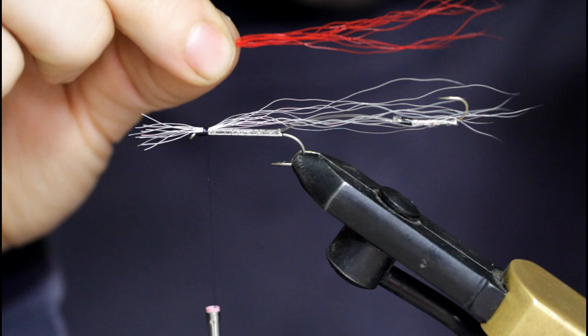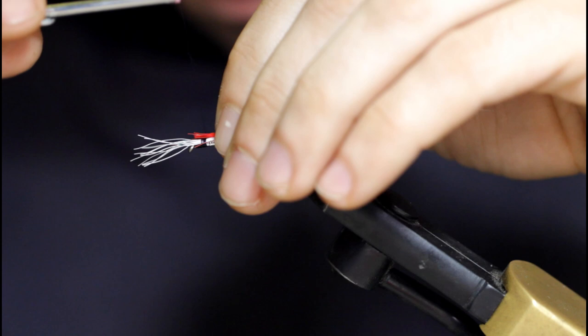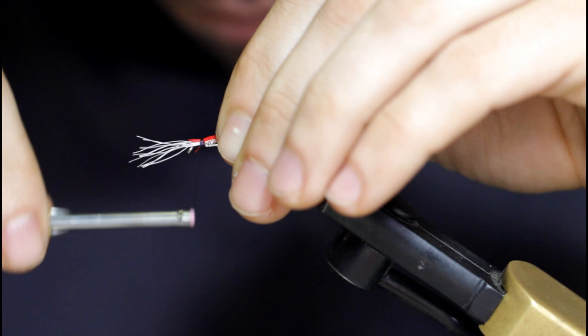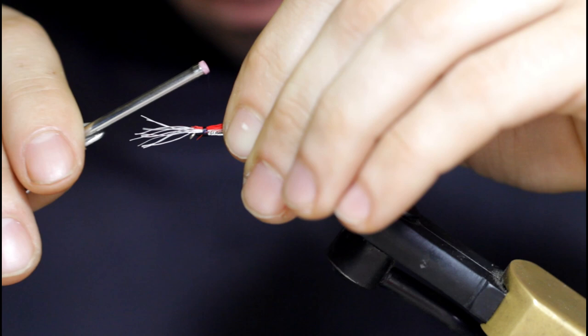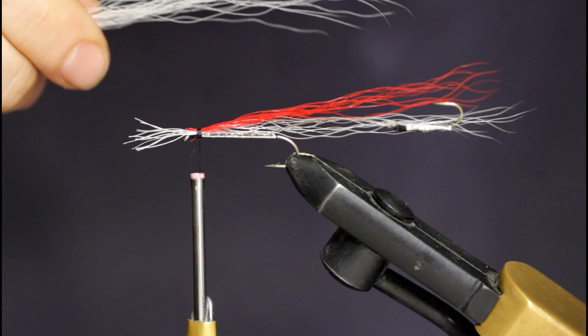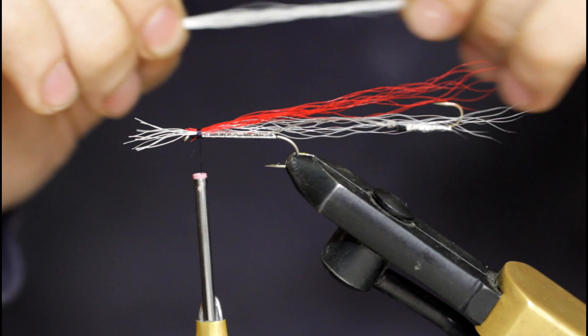Now grab your red bucktail and do the same thing. Tie it in the rear of the head here and work your way towards the front with loose turns. And then you can loosely move the thread backwards towards the rear of the head again to tie in the last material.